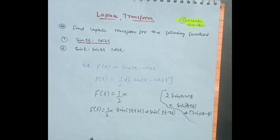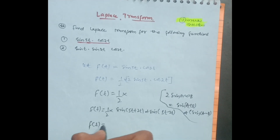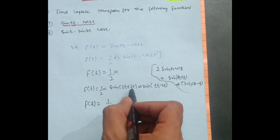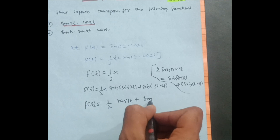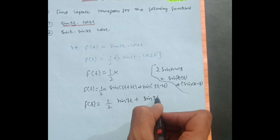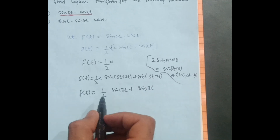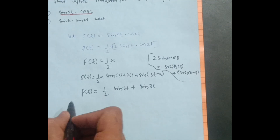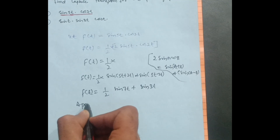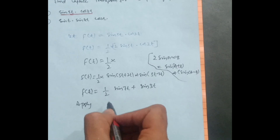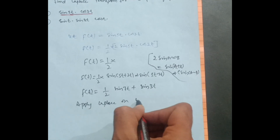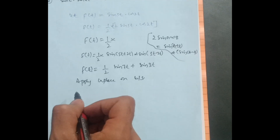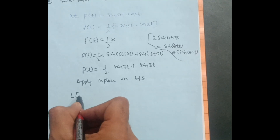So the final simplified equation is f(t) = (1/2) · [sin(7t) + sin(3t)]. Now we apply the Laplace transform on both sides of this equation.